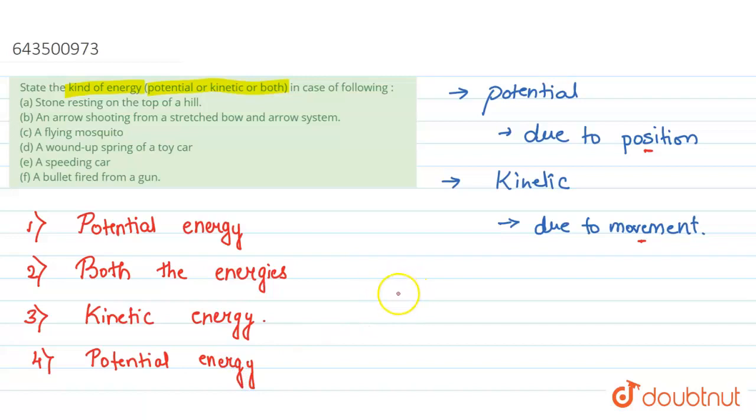Let's go to the fifth one: a speeding car. This is the same as the mosquito—it's due to movement. When a car is moving with speed, it's due to movement, so kinetic energy.